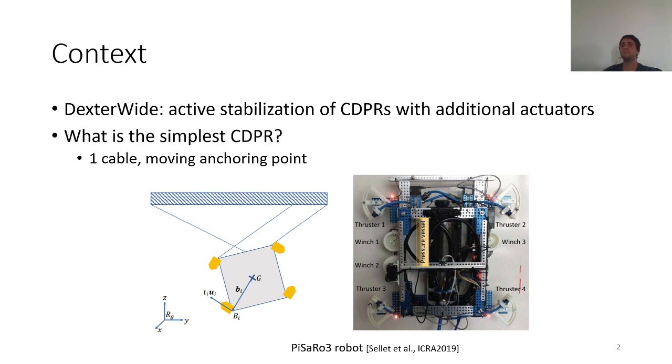When I began my PhD, we were asking the following question: What is the simplest CDPR we can have? And our answer is a robot with one cable but with a moving anchoring point. Well, we can say that this robot is not parallel anymore. We can also say that this robot is closer to an aerial robot rather than to a CDPR.